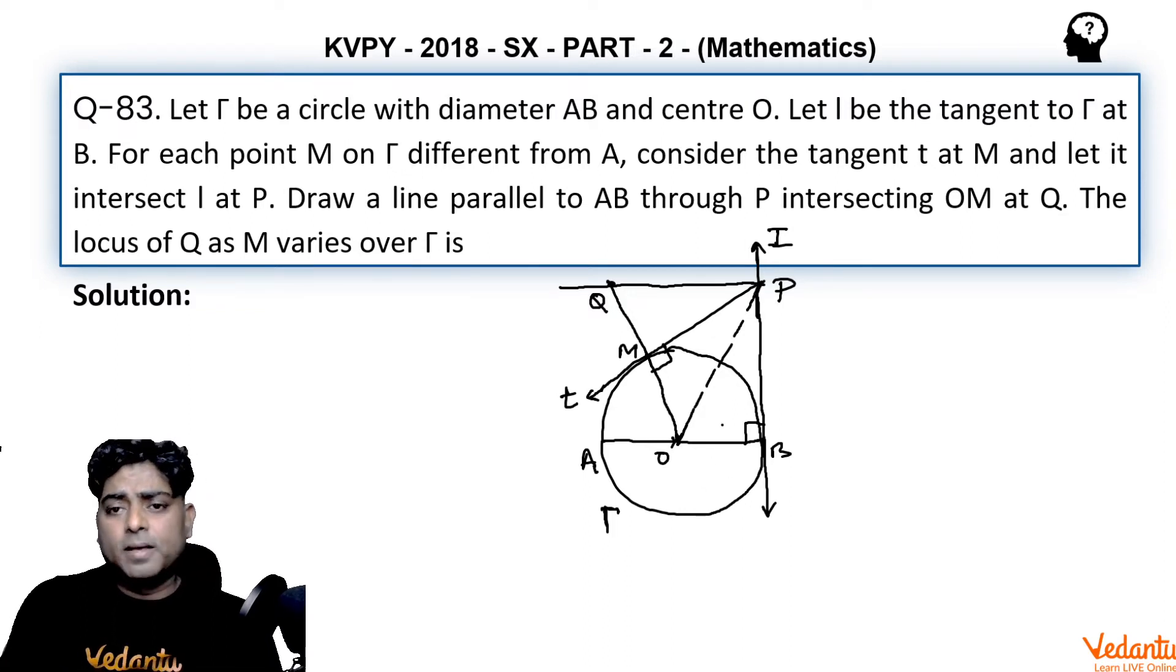See carefully, these two triangles PMO and PBO are congruent. Why? Because these two are equal radii, this is a common side OP, angle 90 degrees. By RHS, these two triangles are congruent. Triangle PMO is congruent to triangle PBO.